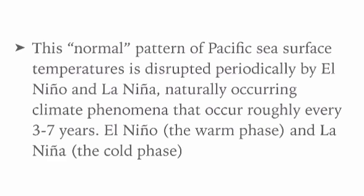Meteorologists believe that El Niño events occur alongside a sudden oscillation called the Southern Oscillation — jo ushtkatibandhi Prashant Mahasagar ke vayumandal mein dabav mein parivarthan ko kehte hai. Basically jab purvi ushtkatibandhi Prashant Mahasagariya chhetr mein tatiya jal garm ho jaata hai, toh samudr ke upar atmospheric pressure kam ho jaata hai. Scientists define these combined events as ENSO — El Niño Southern Oscillation.